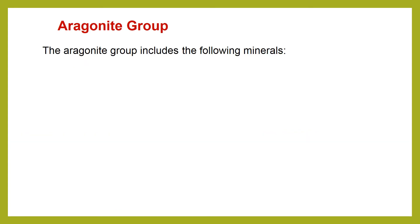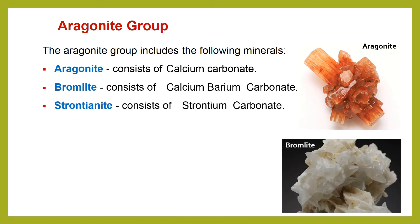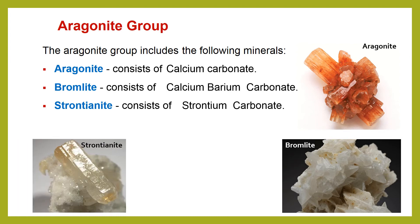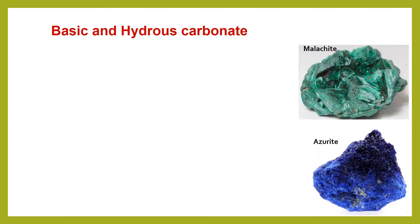The aragonite group also includes the following minerals: aragonite itself, which is also a calcium carbonate; bromelite, which is a calcium barium carbonate; strontianite, which is a strontium carbonate; and finally cerussite, which is the lead carbonate. Then we will go to the hydrous carbonates.